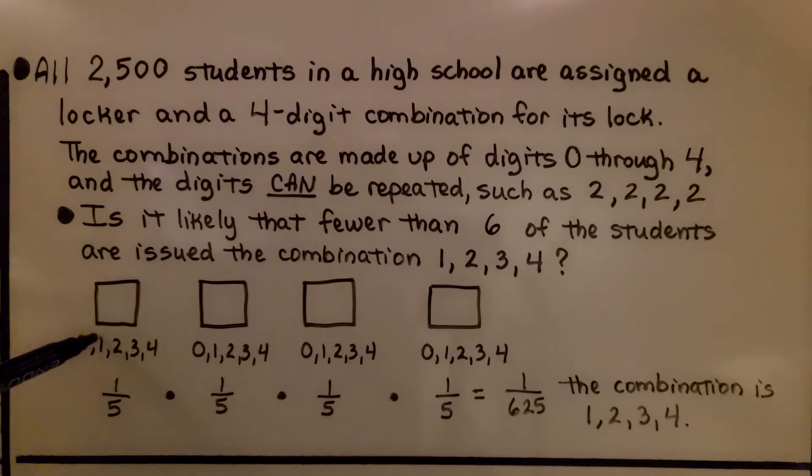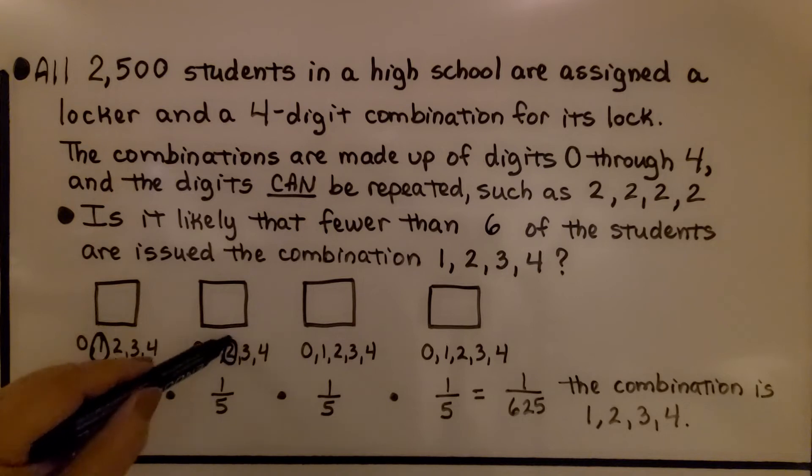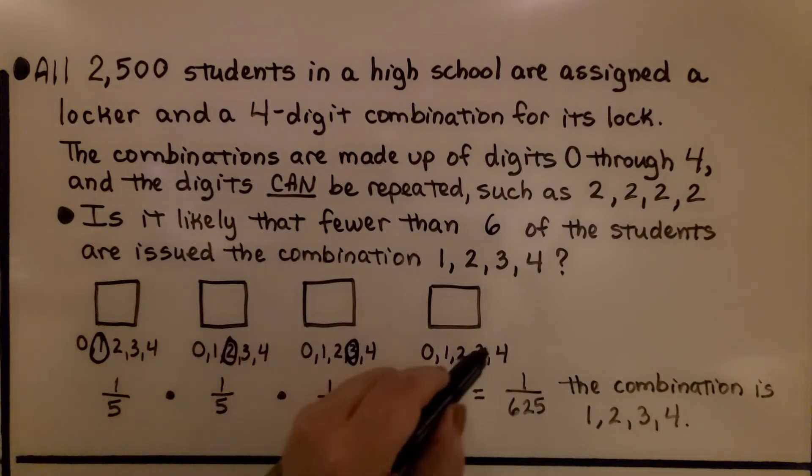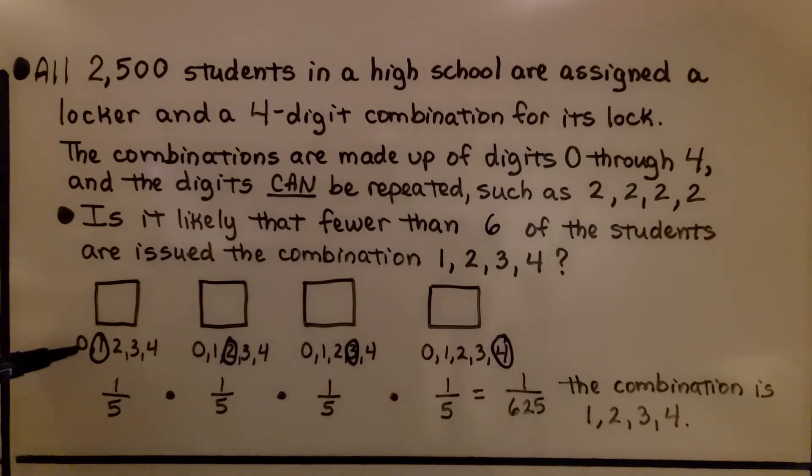So if the combination was 1, 2, 3, and 4, one is one-fifth of these numbers. Two is one-fifth of these numbers. Now we just multiply one-fifth times one-fifth times one-fifth times one-fifth, and we get one-six-hundred-twenty-fifth.